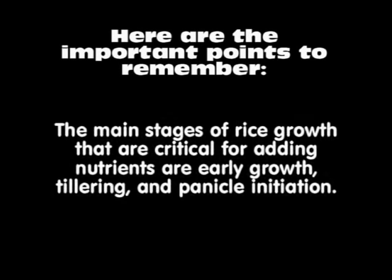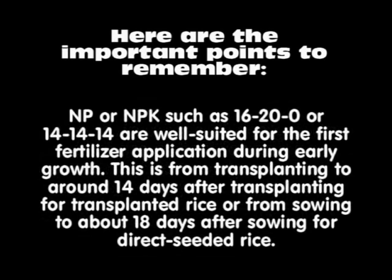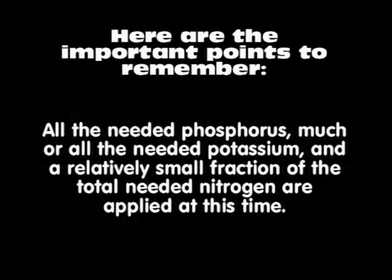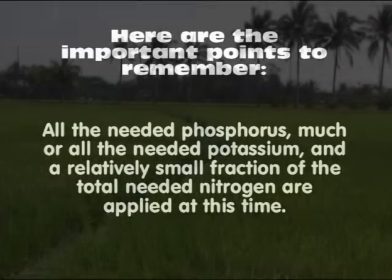Here are the important points to remember. The main stages of rice growth that are critical for adding nutrients are early growth, tillering, and panicle initiation. NP or NPK fertilizers such as 16-20-0 or 14-14-14 are well suited for the first fertilizer application during early growth — from transplanting to around 14 days after transplanting for transplanted rice, or from sowing to about 18 days after sowing for direct seeded rice. All the needed phosphorus, much or all the needed potassium, and a relatively small fraction of the total needed nitrogen are applied at this time.